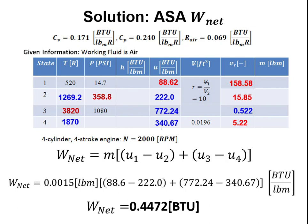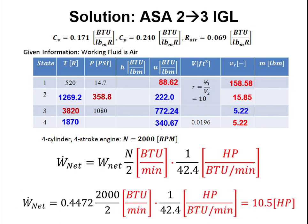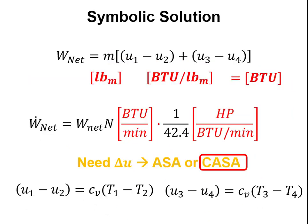Now that we know all specific internal energies, we find net work — in this case 0.45 BTU — and use that with rotational speed to find power. That completes the air standard analysis. For a cold air standard analysis with constant specific heat, all Delta u terms become CV times Delta T, using a single CV value based on a chosen representative temperature.